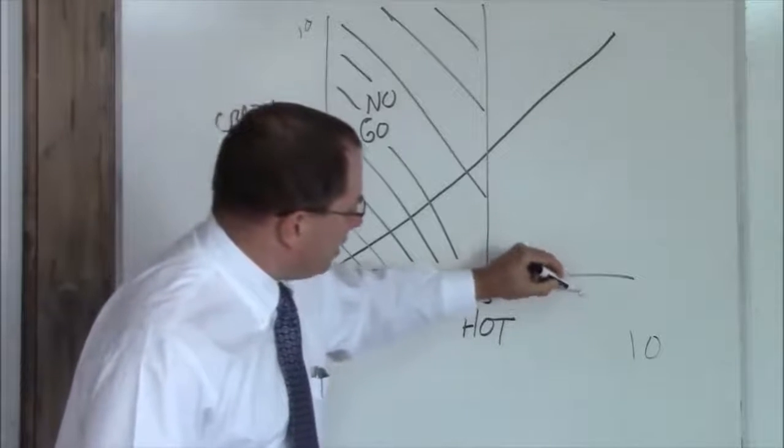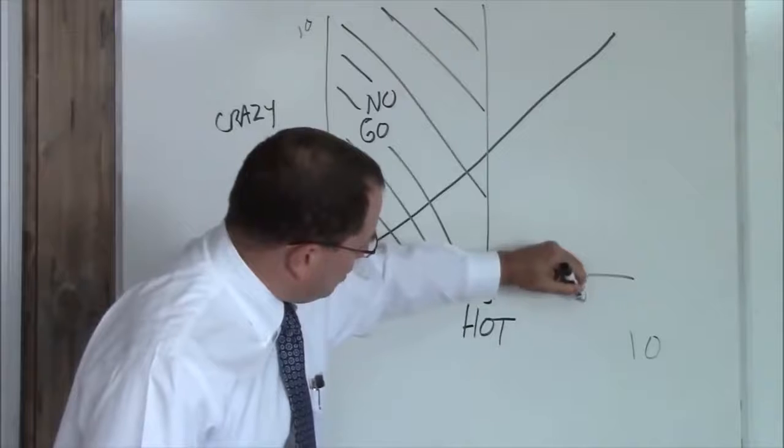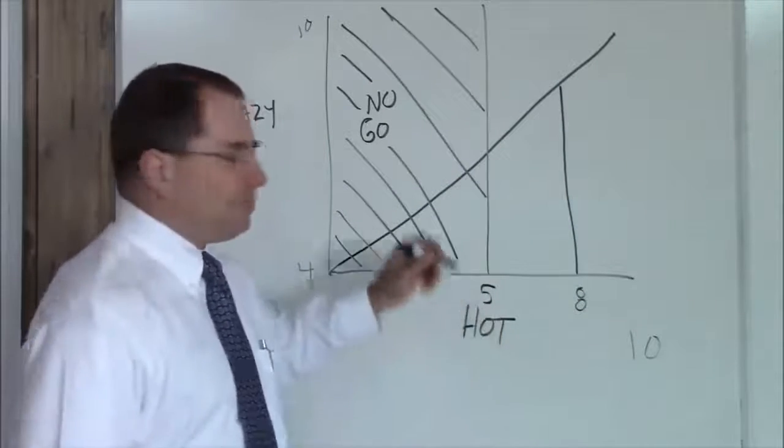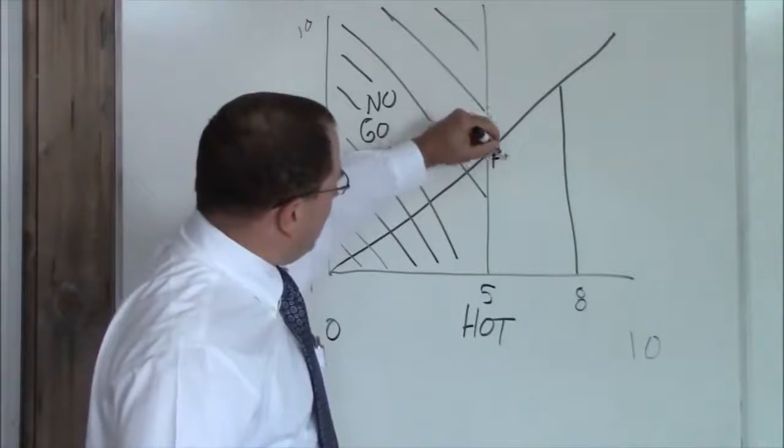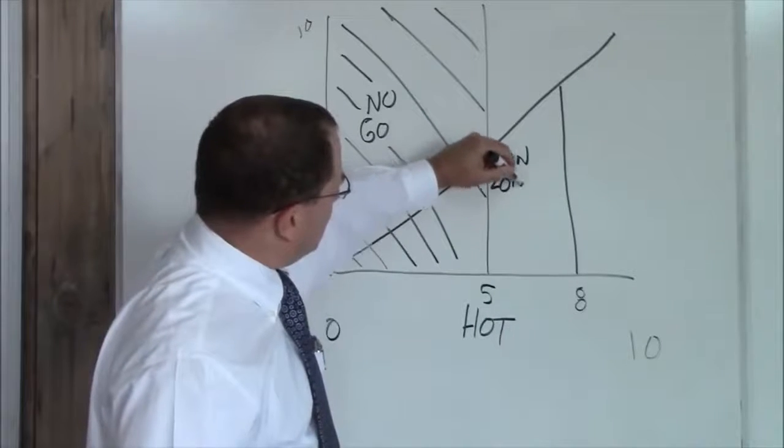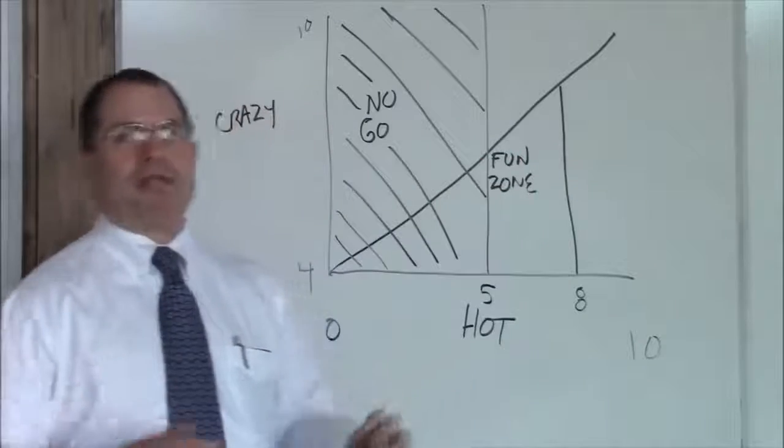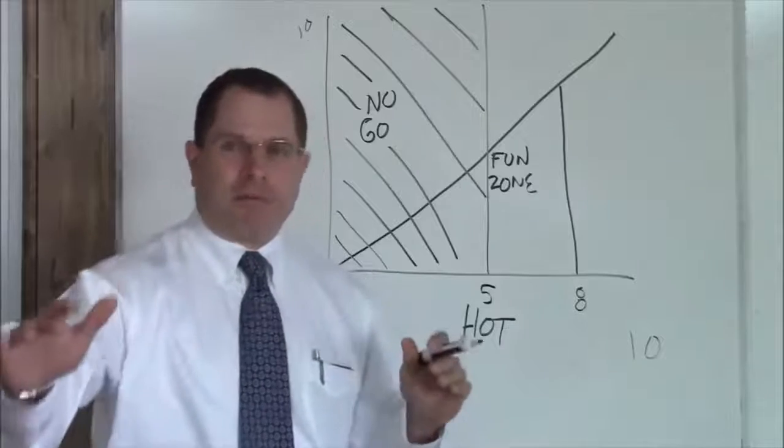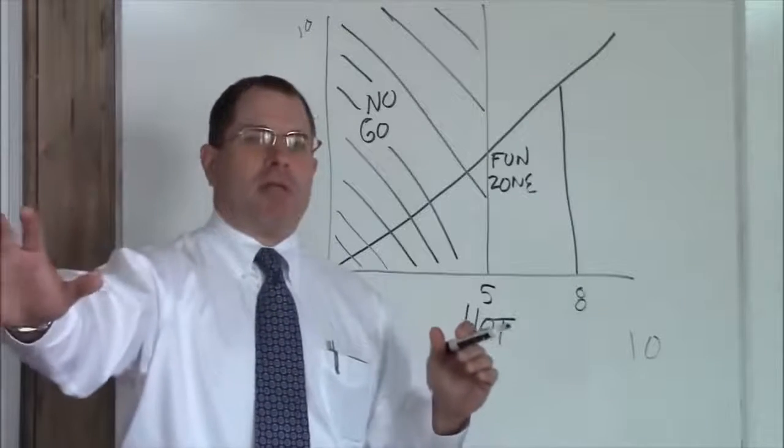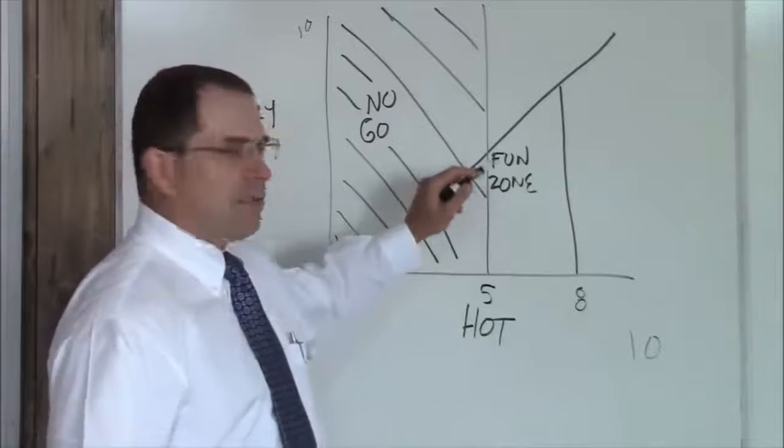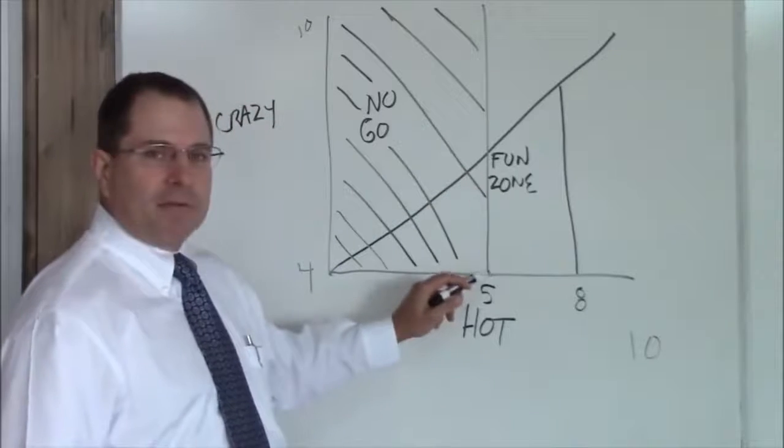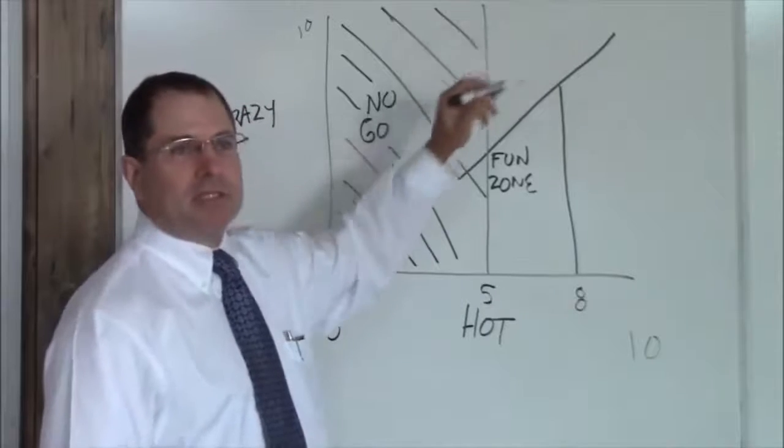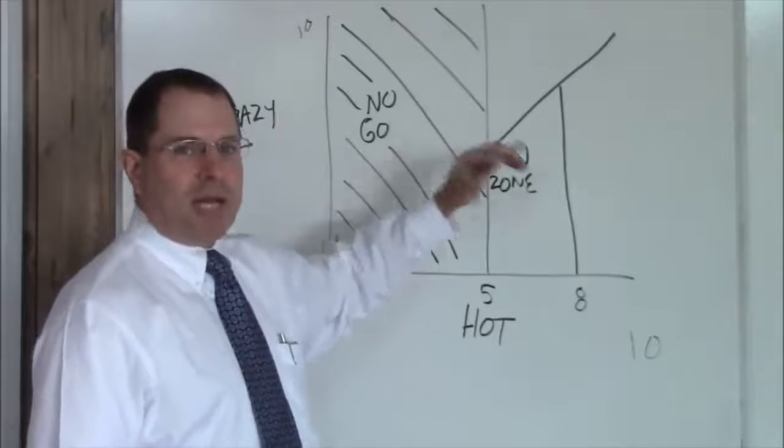Above a 5 and to about an 8 and below the crazy line, this is your fun zone. You can hang out here and meet these girls and spend time with them. That's your fun zone. But keep in mind when you're in the fun zone, you want to move out of the fun zone to a more permanent location. So that's the fun zone above a 5 hot, below an 8 hot, and below the crazy line. This means these are most of the time not crazy.